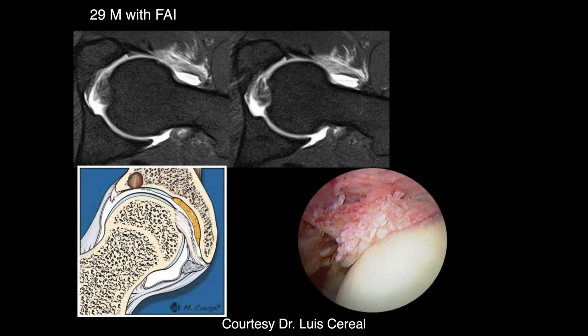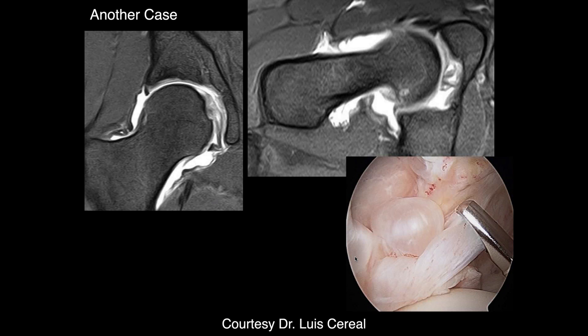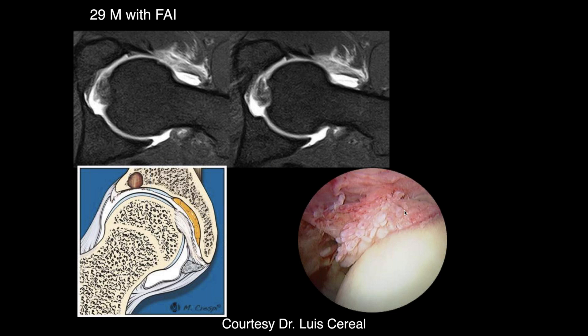An arthrogram was performed and the ligamentum teres is seen under arthroscopic visualization. There appears to be at least some partial-thickness tearing — some fibers remain intact but many are detached and irregular, with granulation tissue present, consistent with a chronic partial tear.